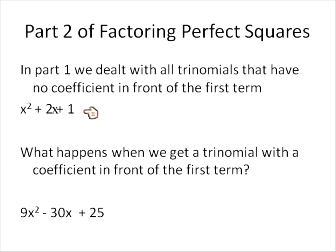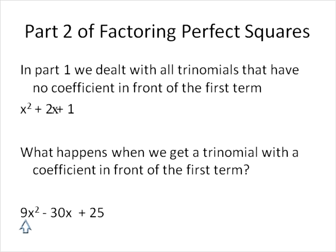In part one, we looked at trinomials that look largely like this — they have no coefficient in front of the first term. In other words, they have no number sitting right there in front of the first term of x squared. But this video will show us what happens when we have a number in front of the first term. For example, here we have 9 in front of the x squared. So if we have a number in front, we're going to have to solve it a little bit differently — we'll do largely the same steps, only we're going to have to do a couple more things.